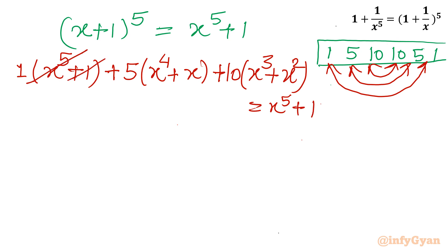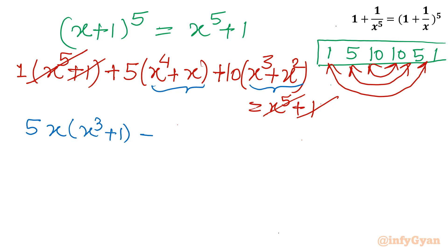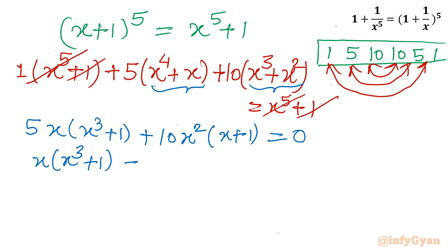Immediately we can cancel x power 5 plus 1 from both sides. What remains is 5x times x cube plus 1 plus 10x square times x plus 1 equal to 0. Now taking x common from the first group and x square common from the second group gives: 5x(x³ + 1) + 10x²(x + 1) = 0.